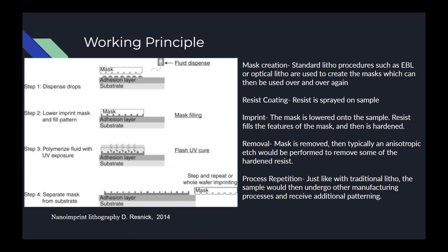Once the mask is created, a resist is used and then pressed together with the mask and substrate in order to achieve successful pattern transfer. Once this is done, the wafer can go through etch and deposition and continue the manufacturing cycle.